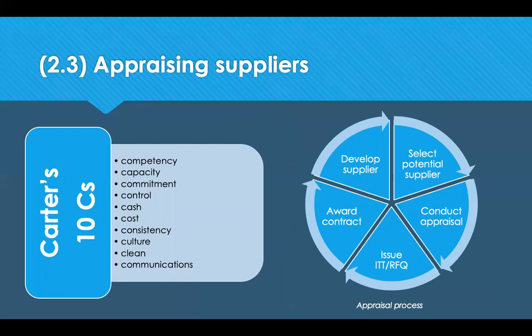Once we know who we want to work with and have a list of potential suppliers, the next step is to appraise them. We do this using a model like Carter's 10 Cs, which are essentially 10 things beginning with the letter C that help indicate whether a bidder is suitable. It's about the bidder, not the bid. We look at competency — making sure they can actually supply what we want — and capacity, because a very competent supplier might not have the capacity to serve you. Commitment looks at their commitment to quality, which is easily assessed if the supplier has ISO 9001 accreditation. Control looks at whether they're in control of their suppliers, having back-to-back terms with their supply chain so that procurement can be continuous.